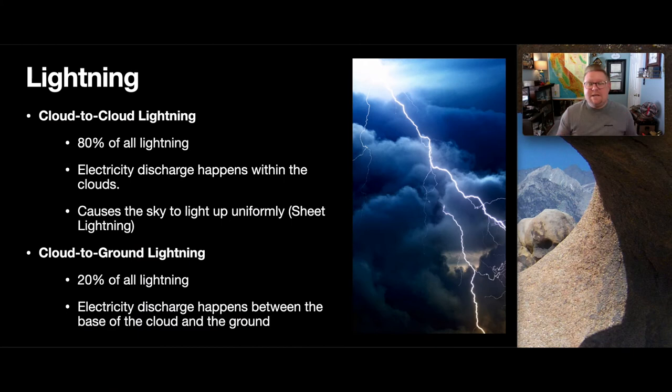Let's begin with lightning. Now, there are two families of lightning that we're going to discuss in this presentation. The first one is cloud-to-cloud lightning, and then the second one is going to be cloud-to-ground lightning. Cloud-to-cloud makes up about 80% of the lightning that's observed. Electricity is discharged between the clouds and causes the sky to completely light up, essentially creating what's known as sheet lightning. So, it's big flashes that are within the cloud itself.